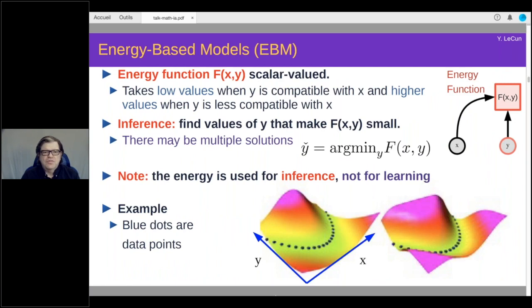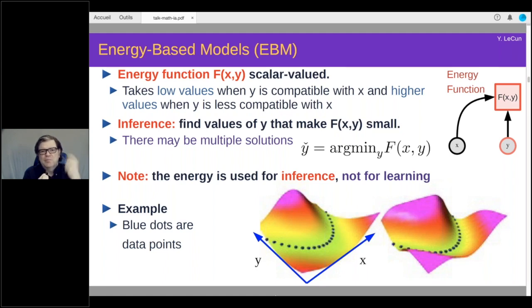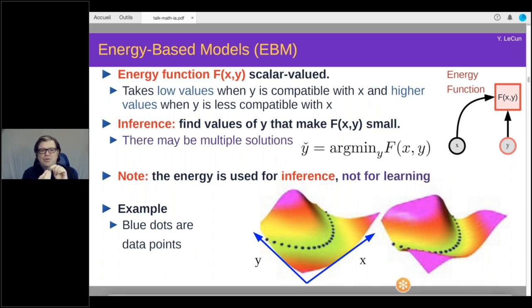Inference in this context consists in finding a y-hat that minimizes f(x, y) for a given x. There might be several possible y values. For a given value of x, the compatible values of y should have lower energy than incompatible ones. Here's a simple example: x and y are scalar variables with an obvious relationship like y = x², forming a parabola. The data points should have lower energy than everything else for a given x. As you move along the y direction, you want the correct value of y to have the lowest energy — but in general, you want multiple values of y to have low energy.